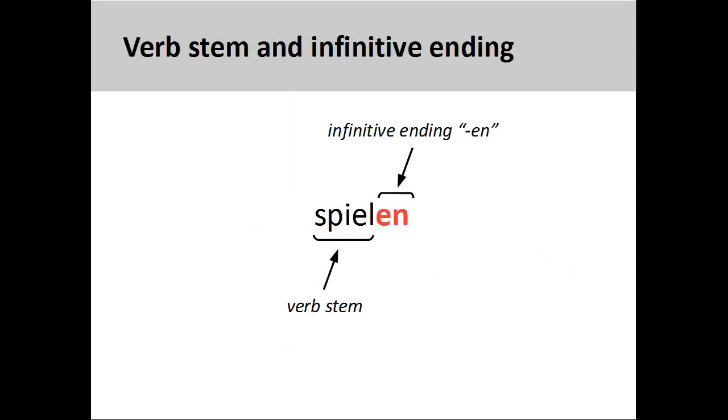Instead, German has an infinitive ending which is attached to the verb stem to form the infinitive. Here, the infinitive ending '-en' is attached to the verb stem 'spiel' to produce 'spielen', to play.